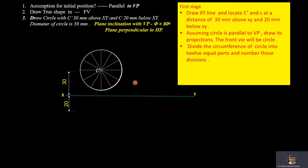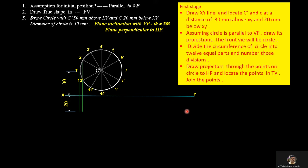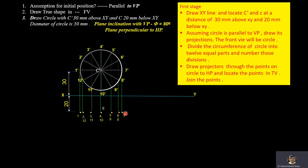Name those divisions, then draw projections from the various division points on the circumference of the circle towards the horizontal plane. Then locate the points, name those points, and join those points. With this we complete the first stage of the projection of the plane. The diameter of the circle is given as 50 mm.